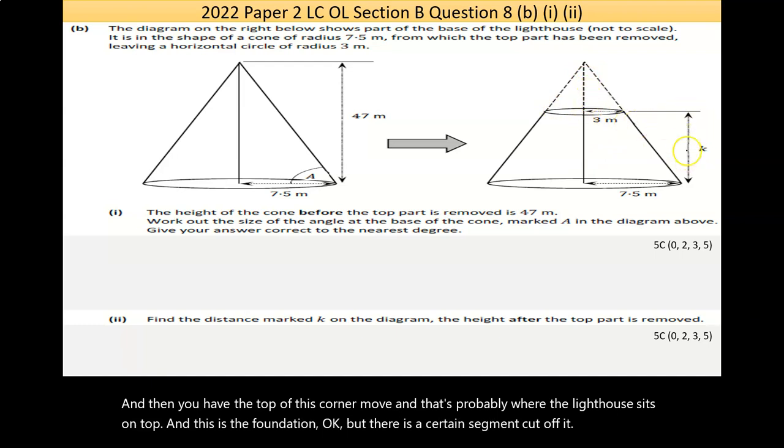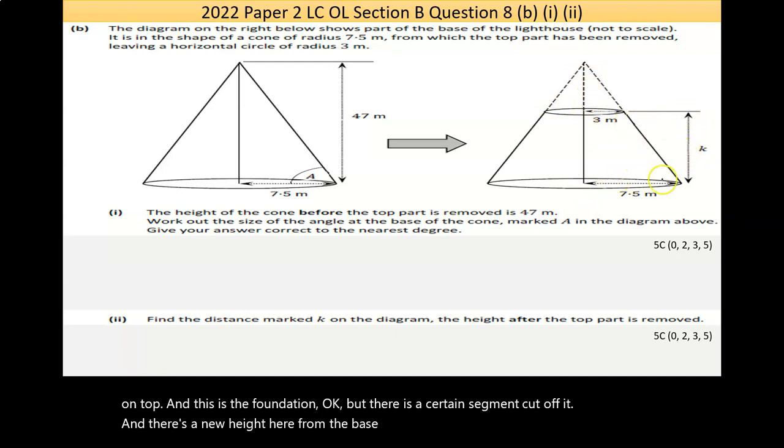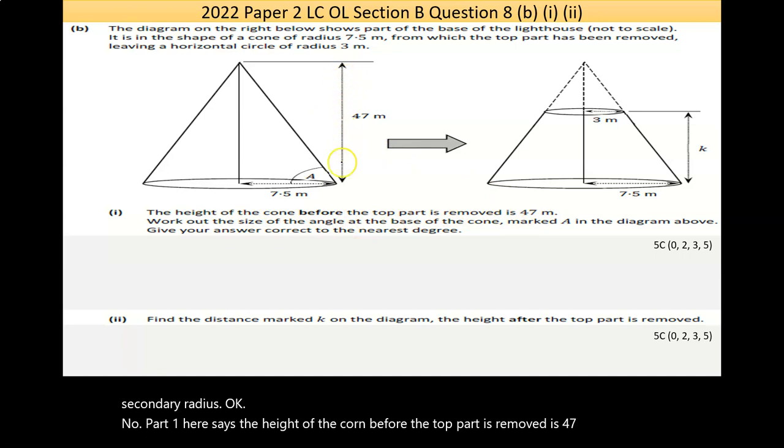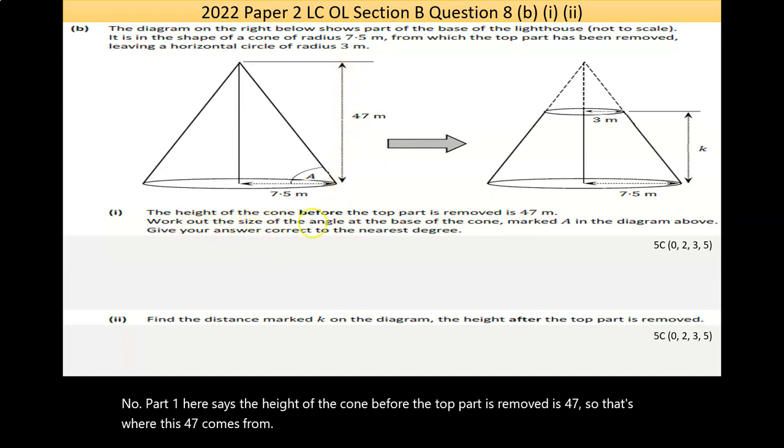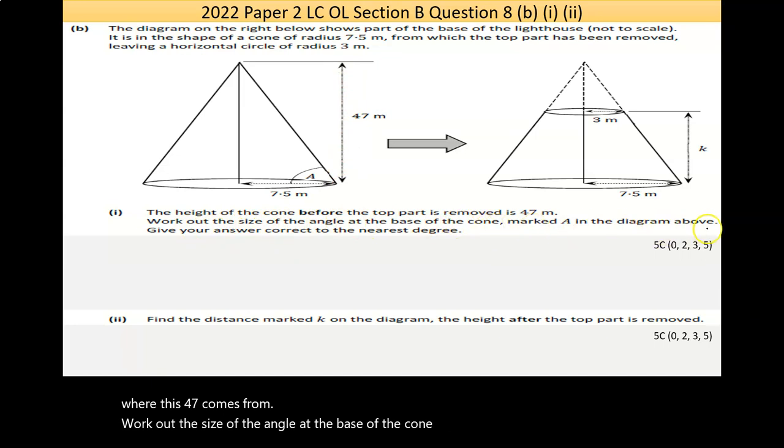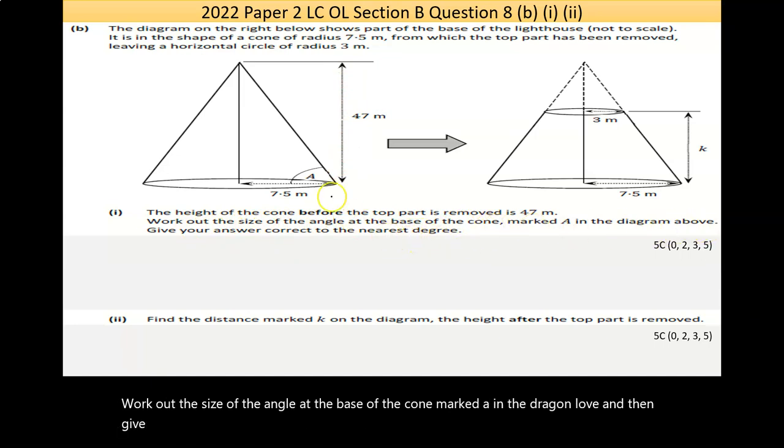But there's a certain segment cut off it, and there's a new height here from the base. The radius is still the same, but there's, in a sense, a secondary radius. Now, part one here says, The height of the cone before the top part is removed is 47. So, that's where this 47 comes from. Work out the size of the angle at the base of the cone marked A in the diagram above, and then give your answer to the nearest degree. Now, if you see this, they've actually helped you out by giving you this line here. That creates a right-angled triangle.